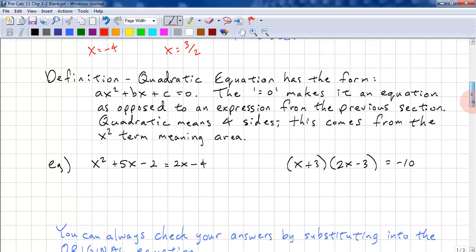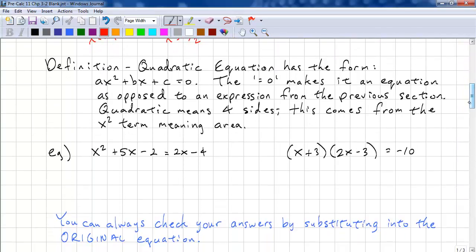So, the definition of a quadratic equation, it has the form ax squared plus bx plus c equals zero. The equal zero makes it an equation. If we left out the equal zero, it's just called an expression. Why is it called quadratic? Quadratic means four and it has four sides. And it comes from the fact that x squared is our first term. And when we have something squared, it's a square.